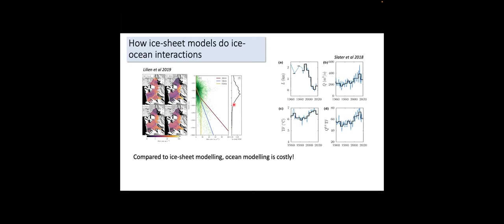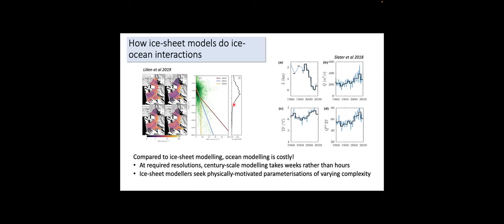There are alternative coordinate systems — sigma terrain-following and density coordinates — that could add higher resolution near the ice-ocean boundary layer, but those come with their own problems at the ice front or grounding line. If you're an ice modeler wanting to accurately represent ice shelf melt, you quickly realize that ocean modeling is very expensive: at required resolutions, century-scale modeling takes weeks rather than hours.